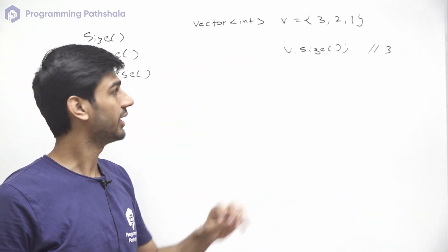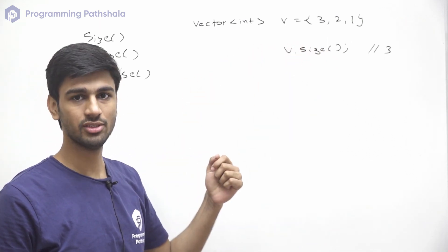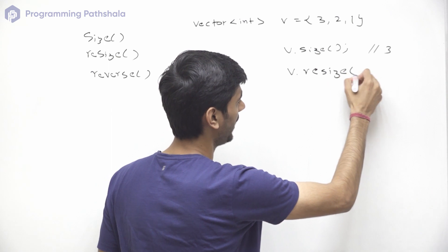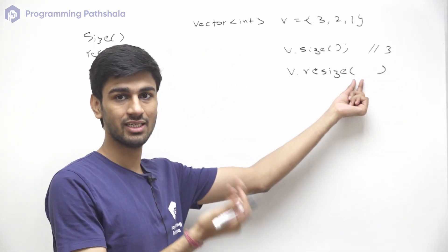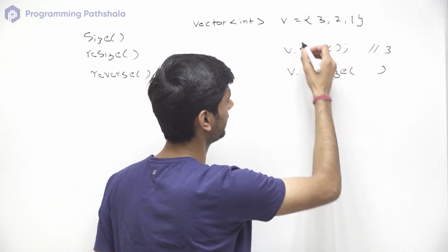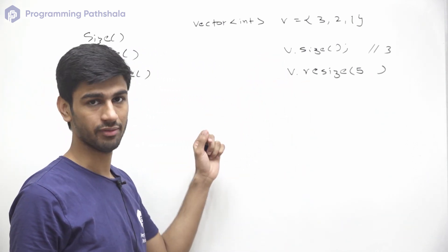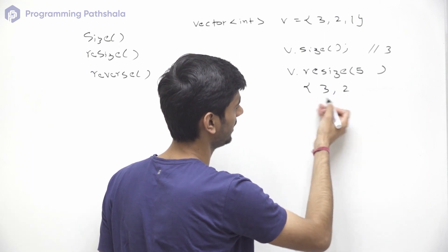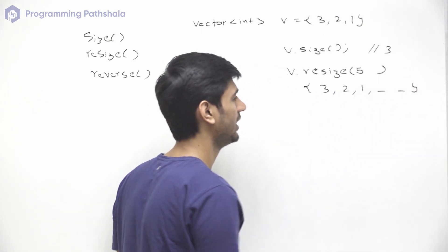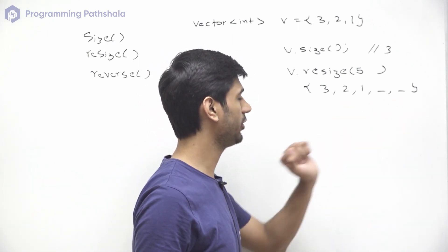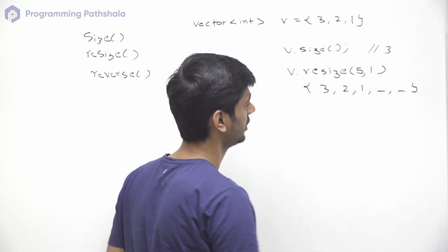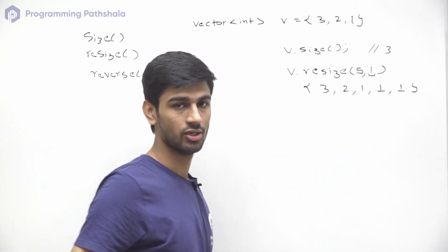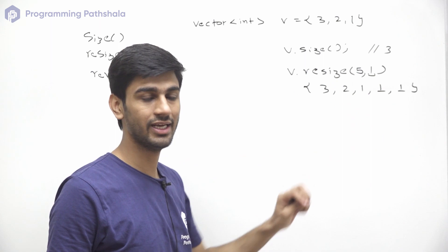Now let's say we want to change the size of this vector. Right now we have 3 elements, but let's say we want the vector to have a size of 5. We can use v.resize(5), which will change the size to that particular value. The first positions will hold 3, 2, and 1, then we will have 2 more new places. If we want to initialize these 2 new places with a particular value, we can pass a second argument — for example, 1 — and those new indices will be initialized to that value.